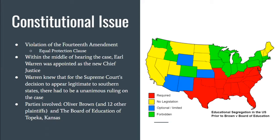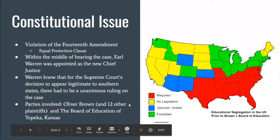This was really crucial in their decision because Warren knew that for the Supreme Court's decision to appear legitimate and be taken seriously in Southern states, there had to be a unanimous ruling. So he wrote their decision multiple times until they all unanimously agreed. The parties involved were Oliver Brown, the father of Linda Brown, and 12 other plaintiffs — those combined cases from across the country — and the Board of Education of Topeka, Kansas. Here is a map of the states showing the status of school segregation before Brown v. Board was ruled on.